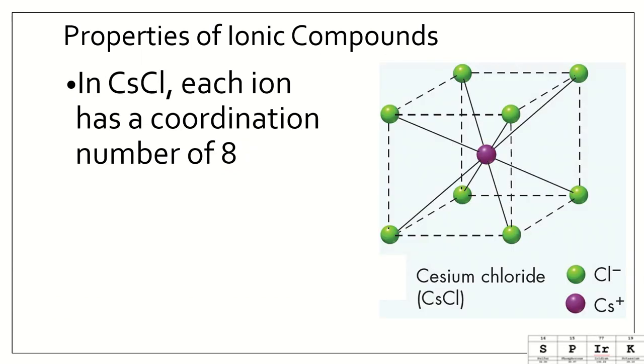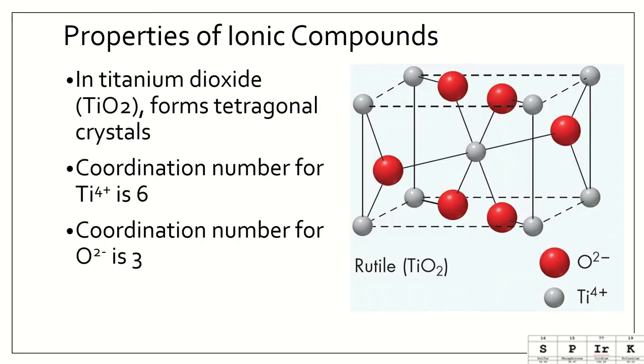So there are different types of crystals. So in cesium chloride, each ion has a coordination number of 8. So again, we have our cesium ion here, and it's touching 1, 2, 3, 4, 5, 6, 7, 8 chlorides. So its coordination number is 8. In titanium dioxide, we see a tetragonal shape. And so, coordination number for the titanium ion is 1, 2, 3, 4, 5, 6. And the coordination number for oxygen is 3. So if you look at the red spheres, they are touching 3.